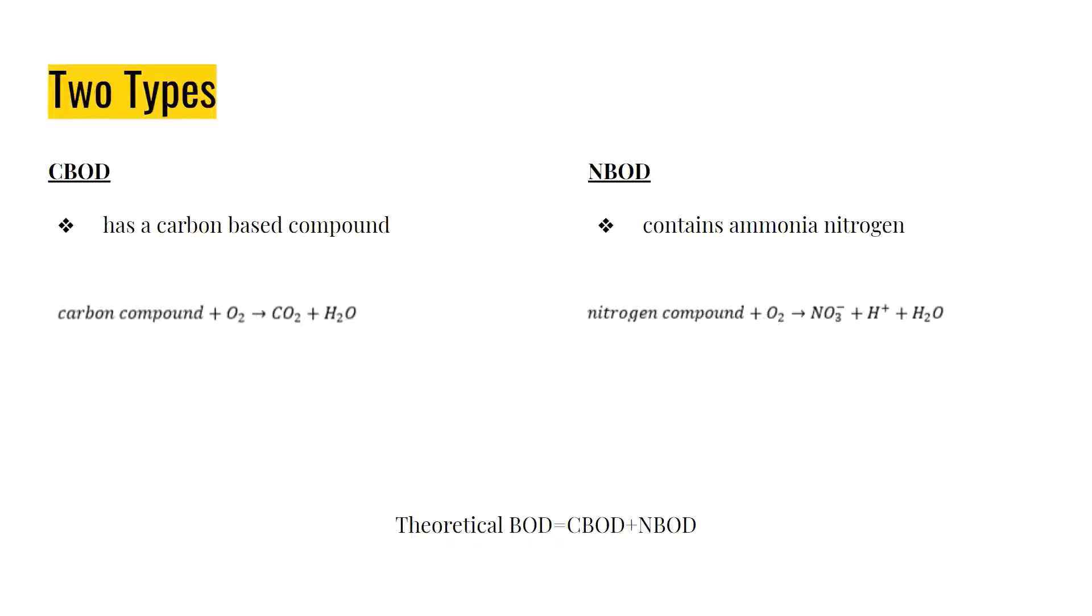In CBOD, we start with our carbon-based compound, and it reacts with oxygen to yield carbon dioxide and water, because we are trying to get the carbon to no longer be dissolved in the water. Similarly, in NBOD, we start with ammonia nitrogen, and it reacts with oxygen to yield nitrate, a hydrogen ion, and water. These two chemical equations are super important to remember, and we'll dive in on how to use them in a bit. The theoretical BOD is just the CBOD plus the NBOD.